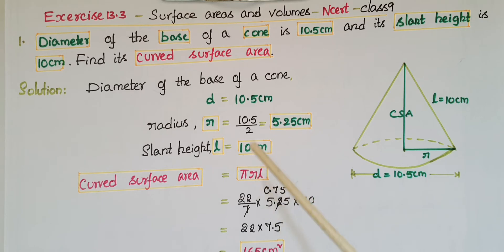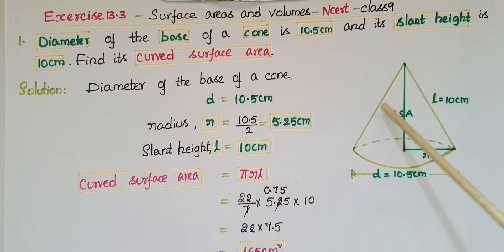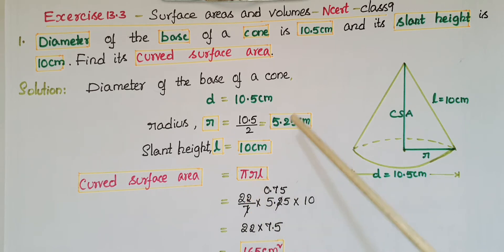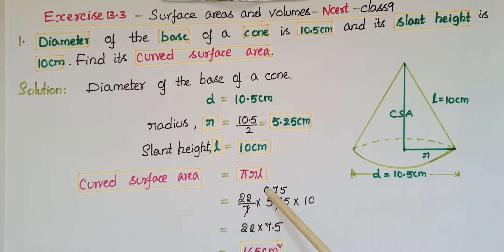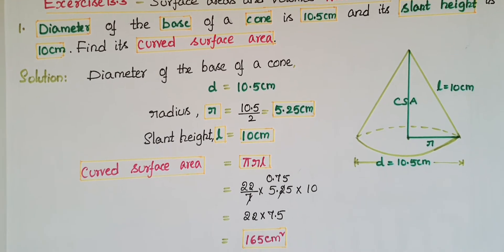We have to find the curved surface area of this cone. Curved surface area excludes the base area, so it equals π r l. That is 22/7 × 5.25 × 10. Simplifying: 5.25 × 10 = 7.5 × 22 = 165 centimeter square. So the curved surface area of the cone is 165 cm².